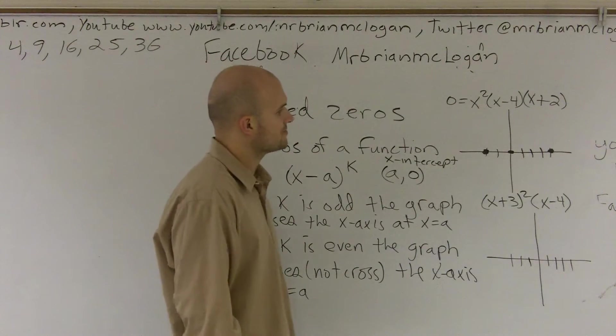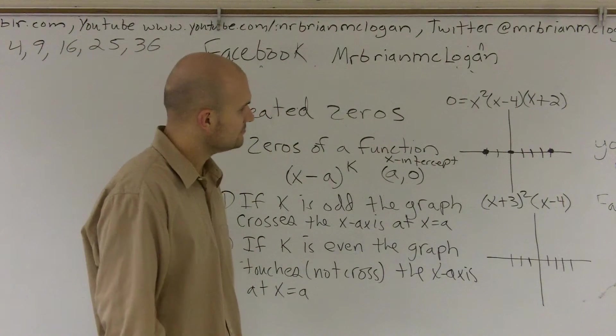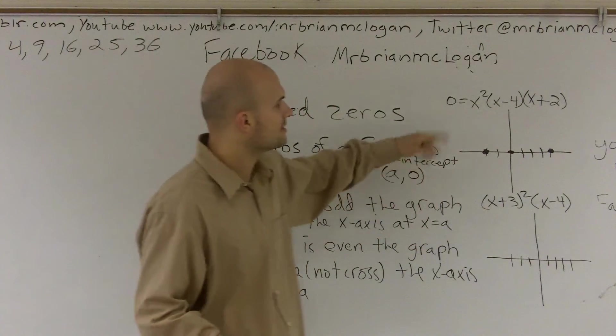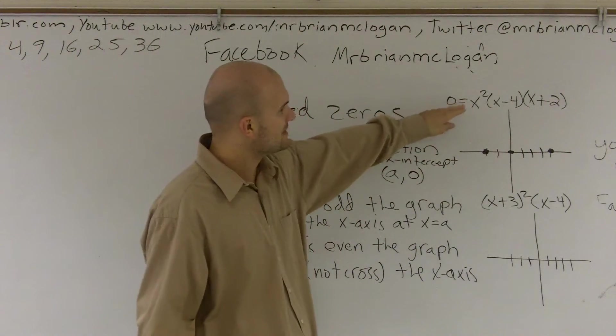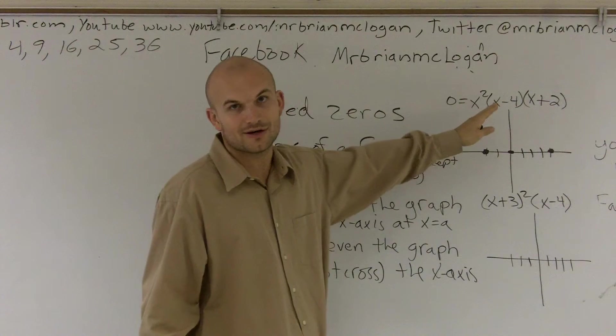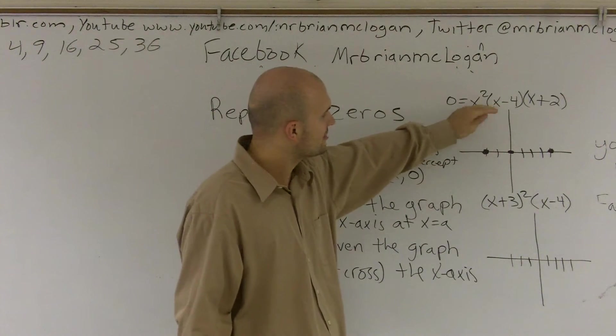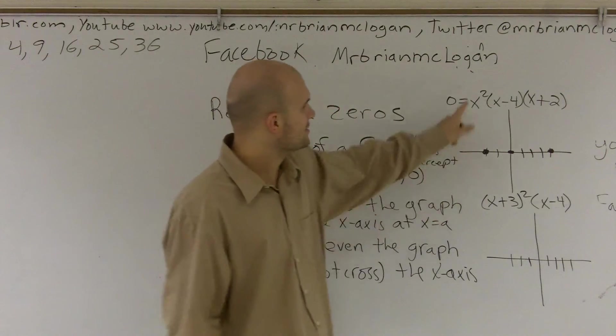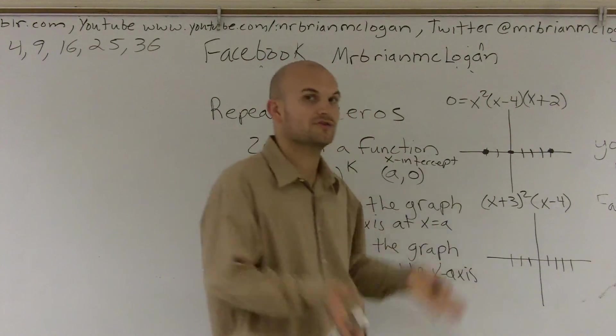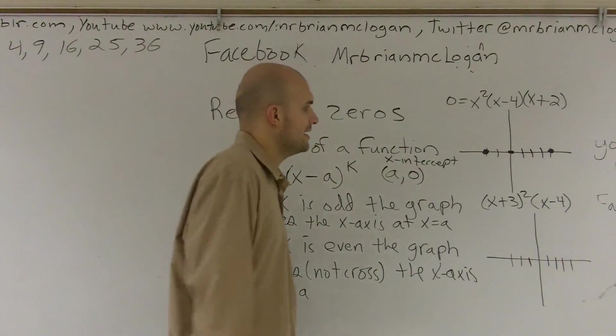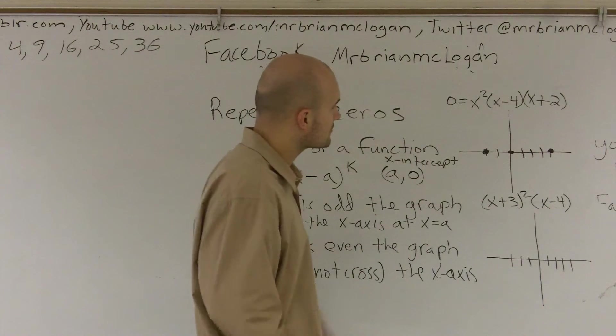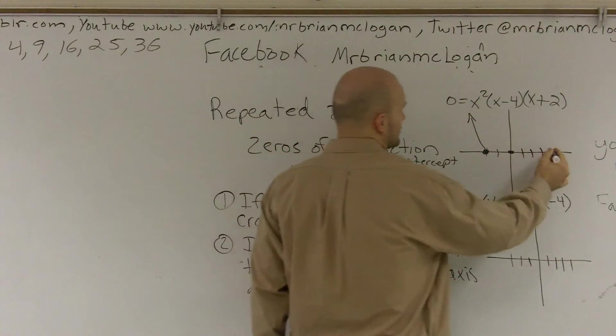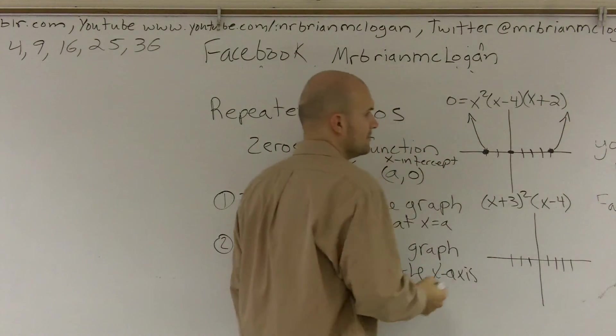So a couple things when looking at this one is, now without really dealing with the end behavior yet, I do know my end behavior is going to be greater than zero, or my a is greater than zero because none of my x's are negative. And I also know it's going to be to the fourth power. So they're going to be going the same direction. And so on this one, I know that my end behavior is going to look like this.